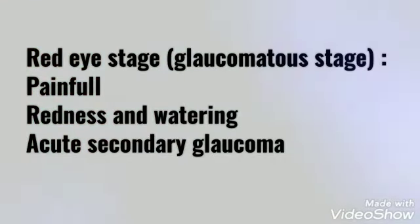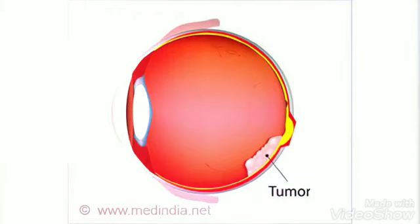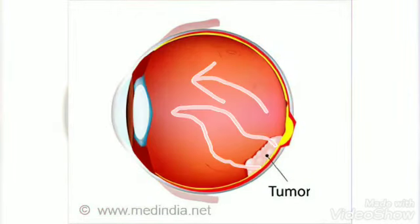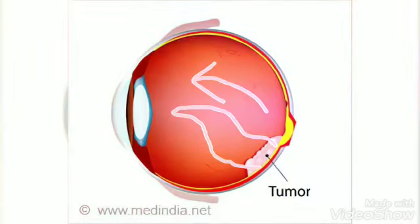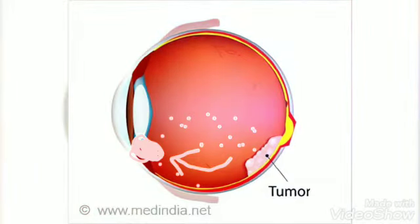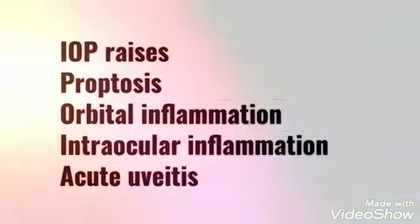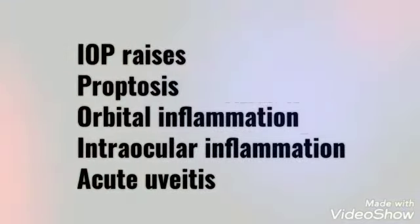In the red eye stage, chances of acute secondary glaucoma are high, which is why it is also called the glaucoma stage. Glaucoma can occur because as the tumor grows, it pushes the iris-lens diaphragm, blocking the angle, or tumor cells migrate and block the trabecular meshwork, causing decreased drainage and raised intraocular pressure.